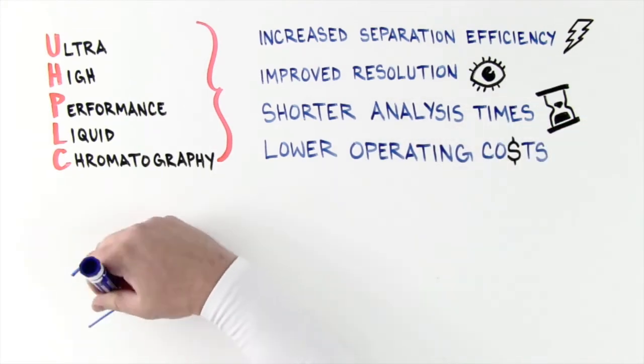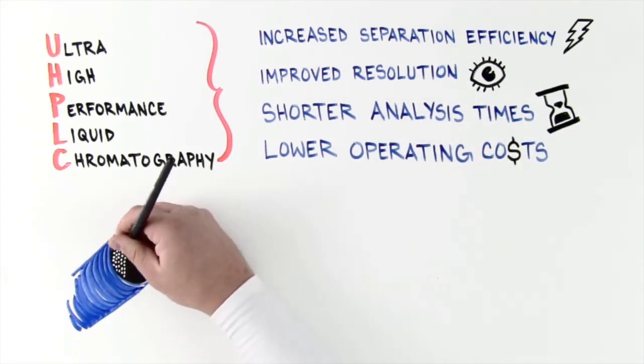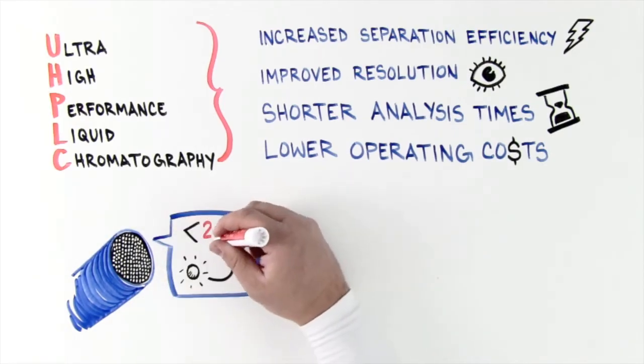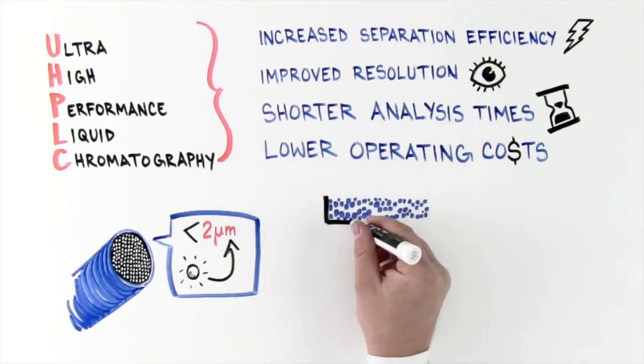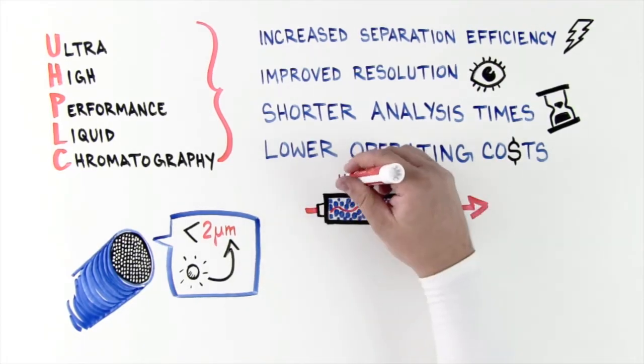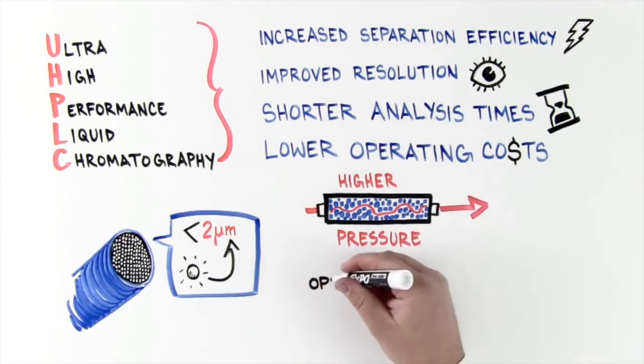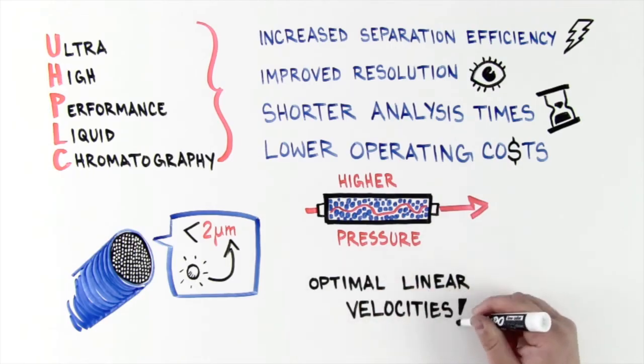It does this by using HPLC columns with mean particle size diameters less than 2 microns, along with new commercially available instrumentation capable of driving the eluent through the columns at subsequently higher pressure. This allows optimal linear velocities to be reached for smaller particle size columns.